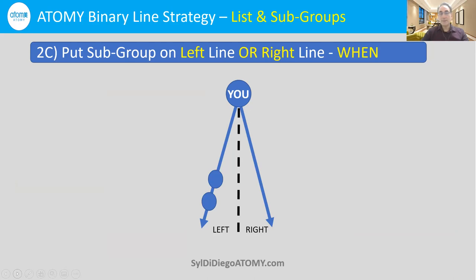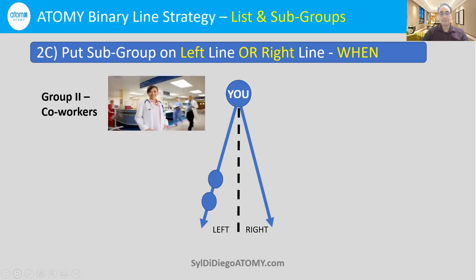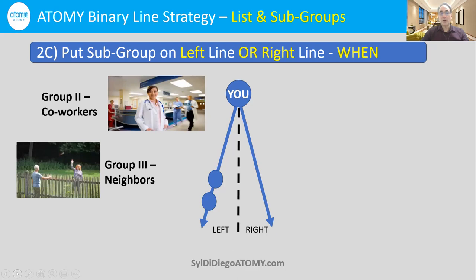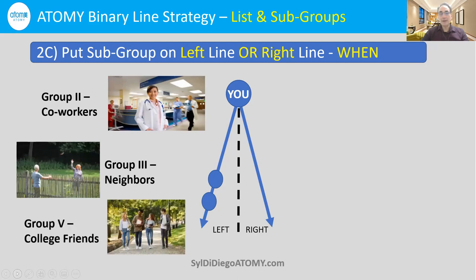It's a typical principle in a binary line system to put a few people at the beginning on your left line — the same line you came in. That's the way that power lines grow. So maybe you'll pick your coworkers or your neighbors or your college friends, but start off by putting a few people on the left side.